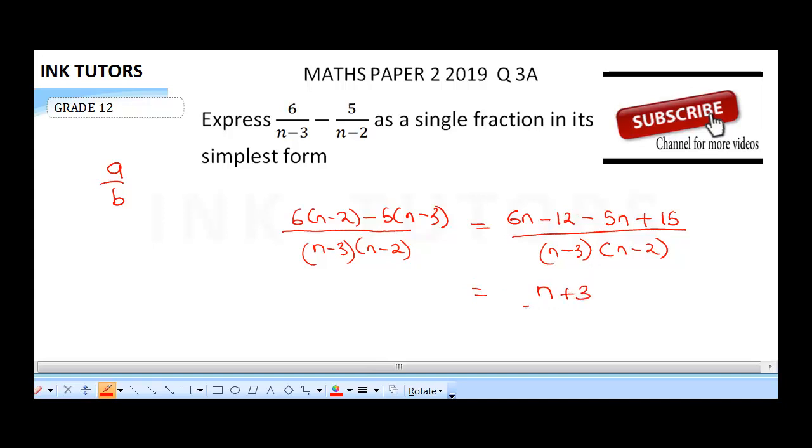So divided by n minus 3 times n minus 2. We can't simplify this any further. So this is our final answer.